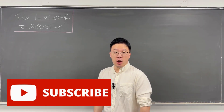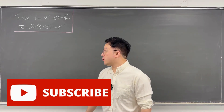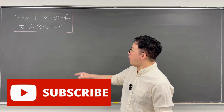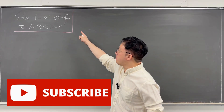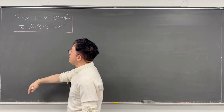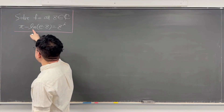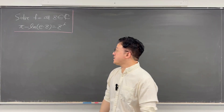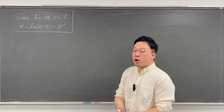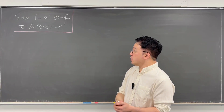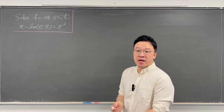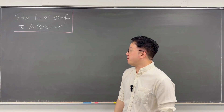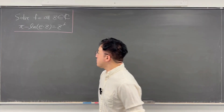Okay, here's an interesting complex equation. The question is: solve for all z that are complex numbers. Pi minus ln of e times z is equal to z to the power of i. We'll be solving this using the Lambert W function.